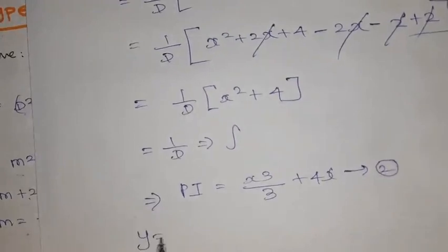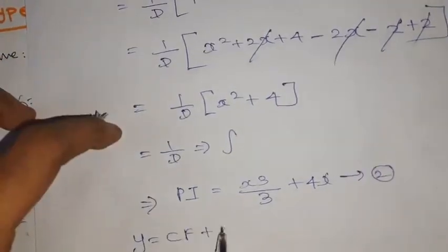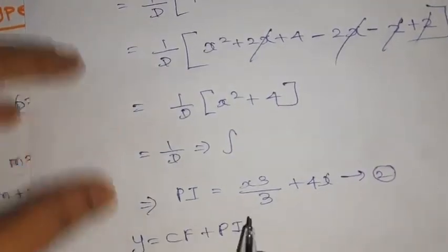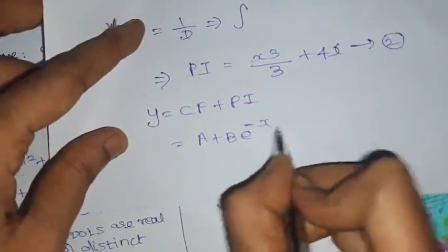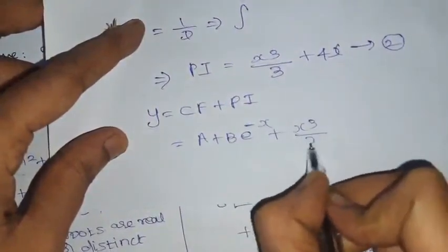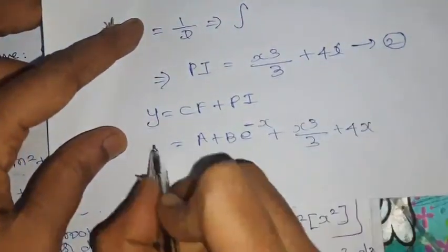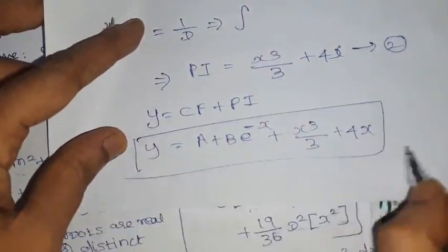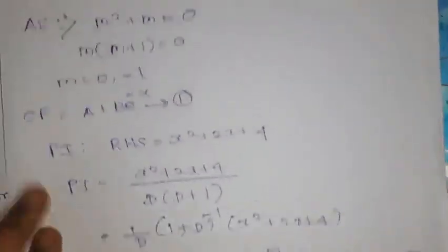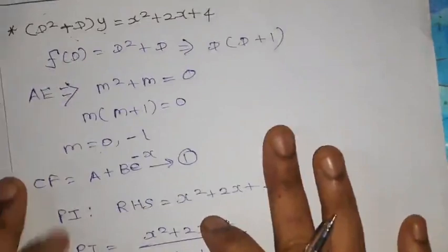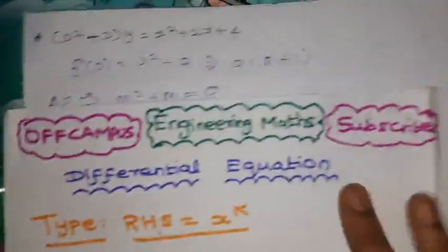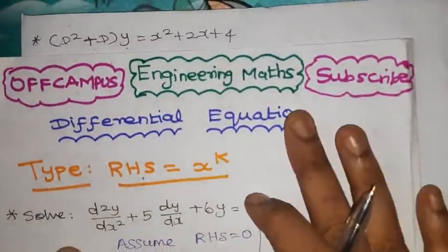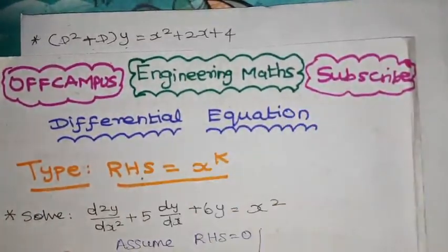The complete solution is y = CF + PI: y = A + B·e^(−x) + x³/3 + 4x. This is the complete solution for this problem. Kindly subscribe to our channel Off Campus and click on the bell icon to receive notifications. Thanks for watching.